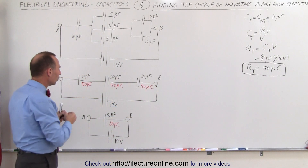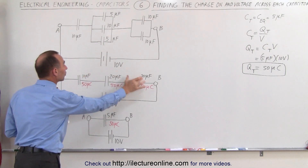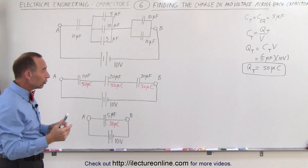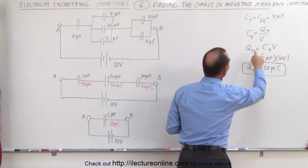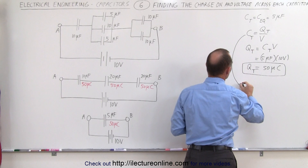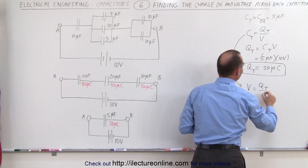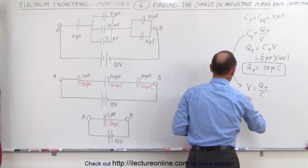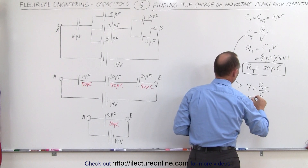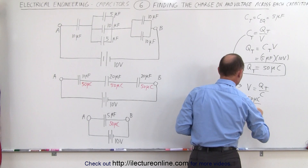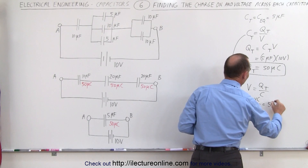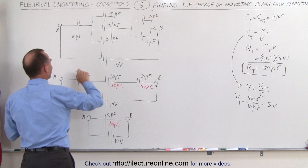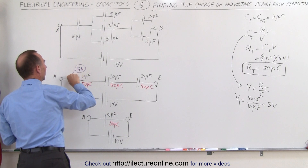Now what is the voltage across each of these three equivalent capacitors? We solve V = Q/C. The voltage across the first capacitor, V1, equals 50 microcoulombs divided by 10 microfarads, which gives 5 volts across this first capacitor.